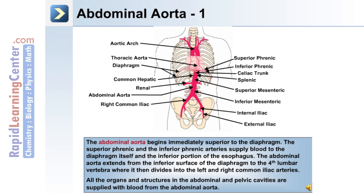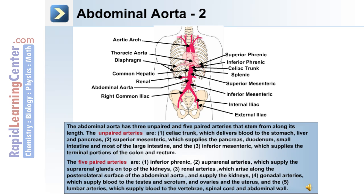All the organs and structures in the abdominal and pelvic cavities are supplied with blood from the abdominal aorta. The arteries that branch from the abdominal aorta are divided into three unpaired and five paired arteries. The unpaired arteries are the celiac trunk and the superior and inferior mesenteric arteries. The celiac trunk delivers blood to the stomach, liver, and pancreas. The superior mesenteric artery supplies the pancreas, duodenum, small intestine, and most of the large intestine. The inferior mesenteric supplies the terminal portions of the colon and the rectum.